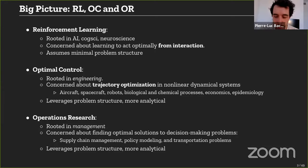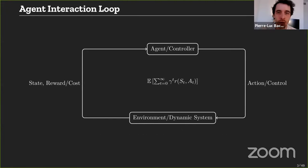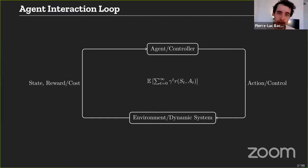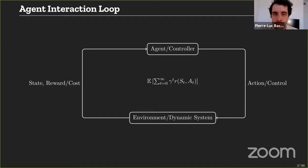The beautiful thing is that all these fields actually share the same tools and the same mathematical foundation. Hopefully I'll convince you today that you should be looking across different fields to come up with new tools and new insights. This picture of the agent-environment interaction loop spans across different fields. At the top we have an agent — a term used in RL — whereas in optimal control we usually talk about a controller. That controller or agent interacts with an environment or dynamic system through some action or control.